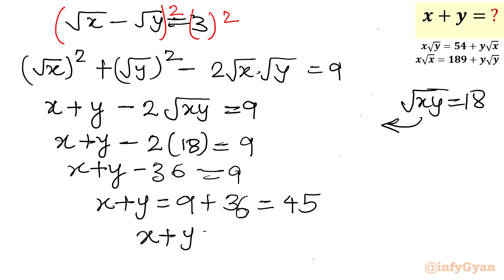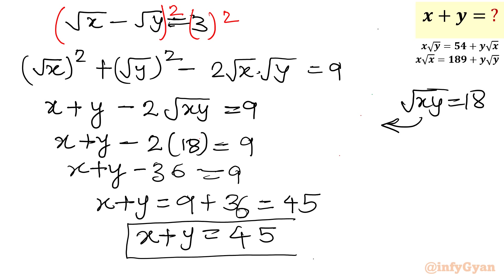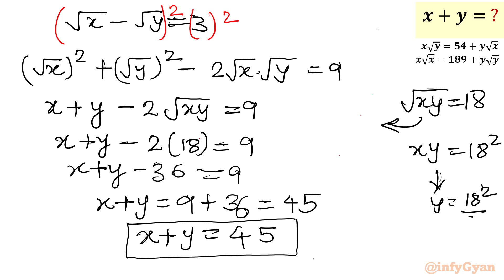So our answer for x + y is 45. If asked to find x and y separately, note that xy = 18² = 324 and x + y = 45. Using the identity (a − b)² = (a + b)² − 4ab, or substituting y = 324/x into a quadratic, we can find the individual values. I hope you liked this video. Do not forget to like, share, and subscribe. We will meet in the next video — bye-bye, take care.